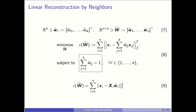Linear reconstruction by neighbors is the second step of LLE. We denote the weights as w̃_i — a k-dimensional vector of k-weights for reconstructing x_i using its neighbors in the input data space. Each element is denoted w̃_{i1} through w̃_{ik}. If we put the weight vectors w̃_i together for all n data points, we have a matrix W̃ of size n-by-k, where rows are data points and columns are reconstruction weights.